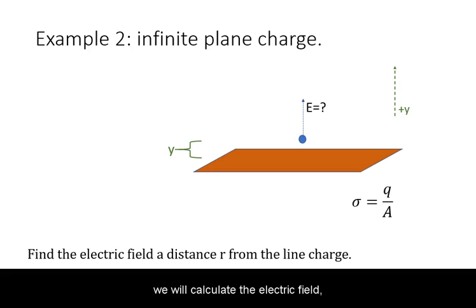For example, we will calculate the electric field at some distance y away from a uniform infinite plane charge. The surface charge density sigma is equal to charge per area and is constant.